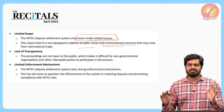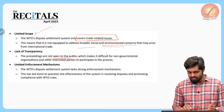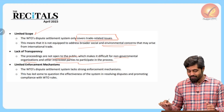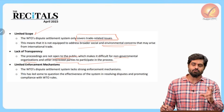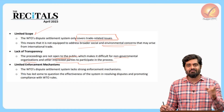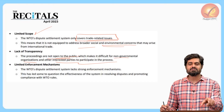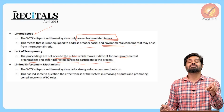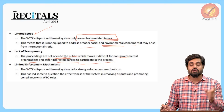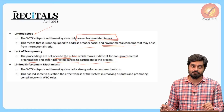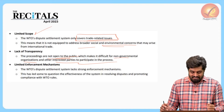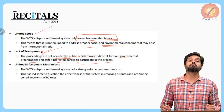Fourth criticism: lack of transparency. The disputes and functioning of the body are not open to the public, and therefore non-governmental organizations and interest groups cannot participate in the process. Since the agreements signed will impact farmers, industries, and other stakeholders, the groups representing these interests should be allowed to participate. If direct stakeholders are not involved, the process lacks transparency and people's participation.